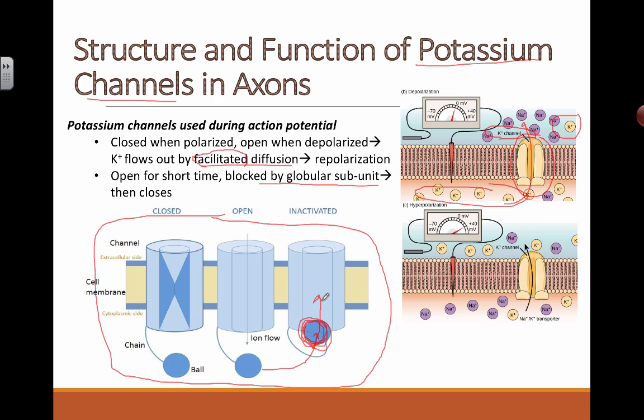When we need it, it can open up and the ions can flow by facilitated diffusion. So structure and function of potassium channels in axons—axons are the long part of a nerve cell. So if you have a nerve cell,